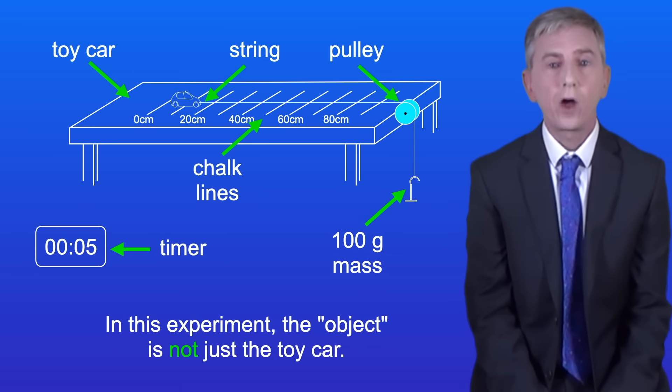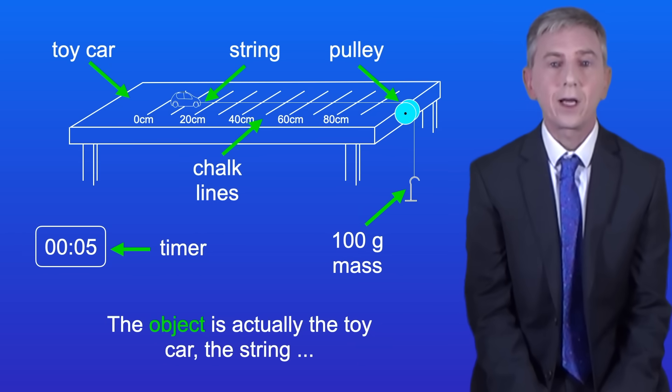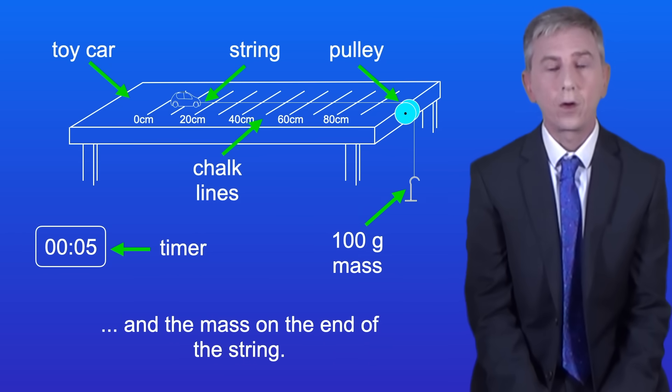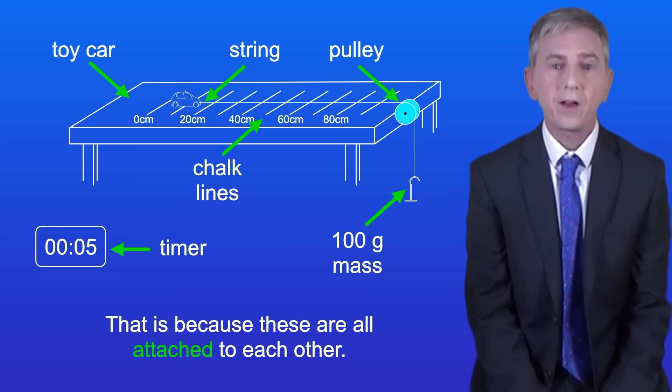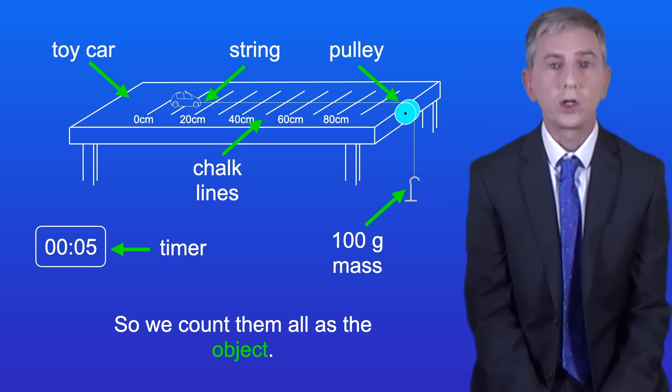In this experiment the object is not just the toy car. The object is actually the toy car, the string and the mass on the end of the string. That's because these are all attached to each other so we count them all as the object.